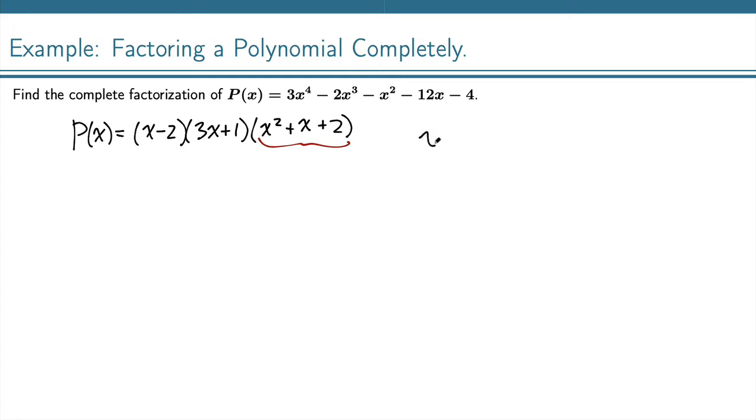So I have x equals, the quadratic formula is -b ± √(b^2 - 4ac) all over 2a. And so for my zeros, I get -1 ± √(1^2 - 4 times 1 times 2) over 2.